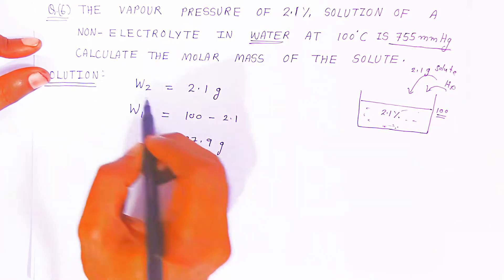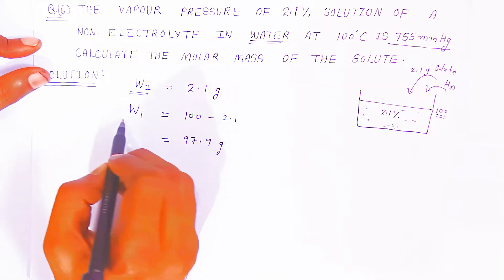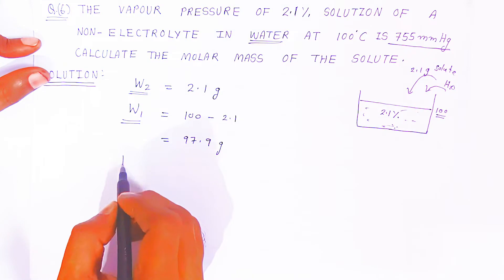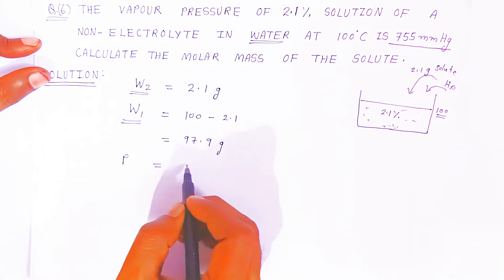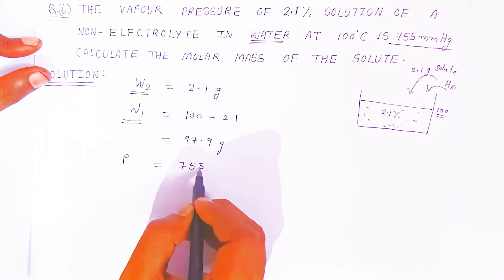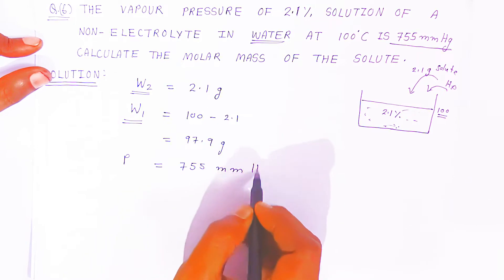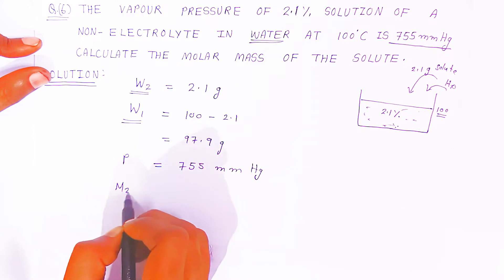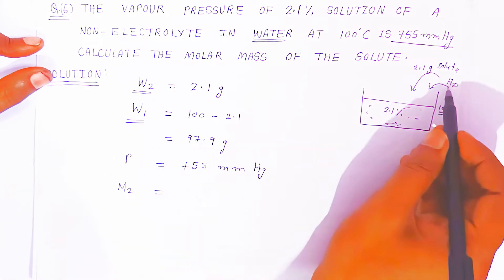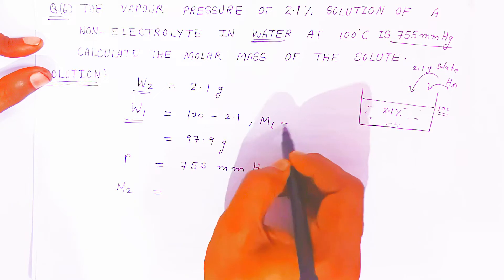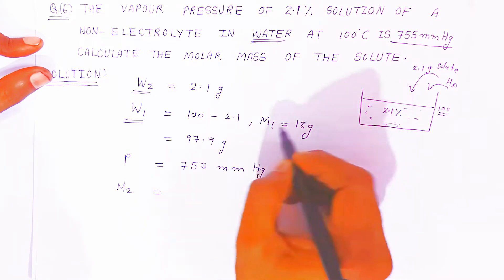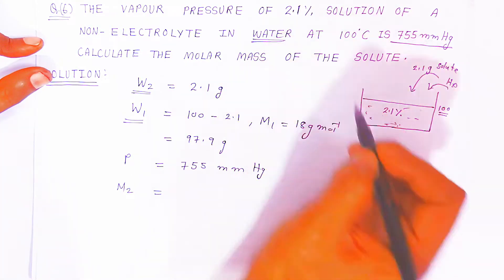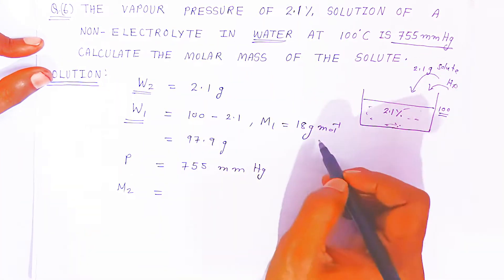Now you know the weight of solute and the weight of solvent. The vapor pressure of solution, P, is given as 755 mmHg. You have to remember that the pure vapor pressure of water, P0, is always taken as 760 mmHg. This value you should know — even if it is not given, because it is water. Also, since the solvent is water, M1 = 18 grams per mole (H2O: 16 + 2 = 18).